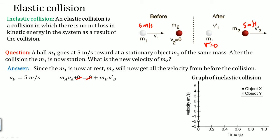Let's look at the graph of the elastic collision. M1 starts at 5 meters per second and after the collision drops to zero. M2 starts at zero and after the collision rises to 5 meters per second. There is no loss here — the total kinetic energy is conserved.